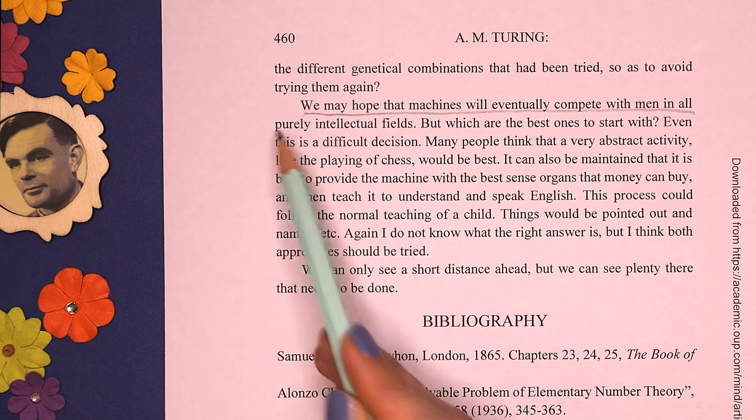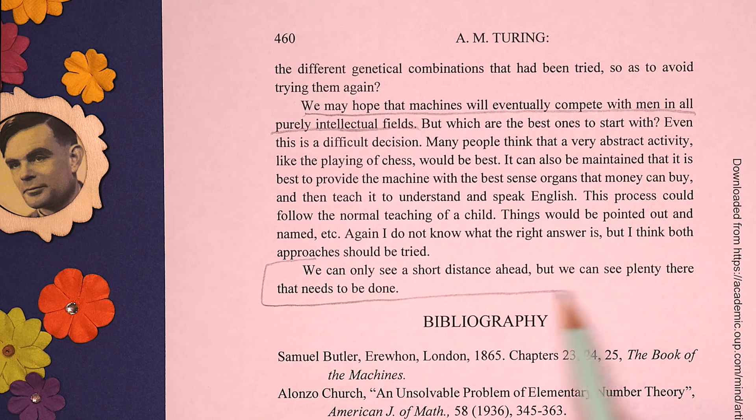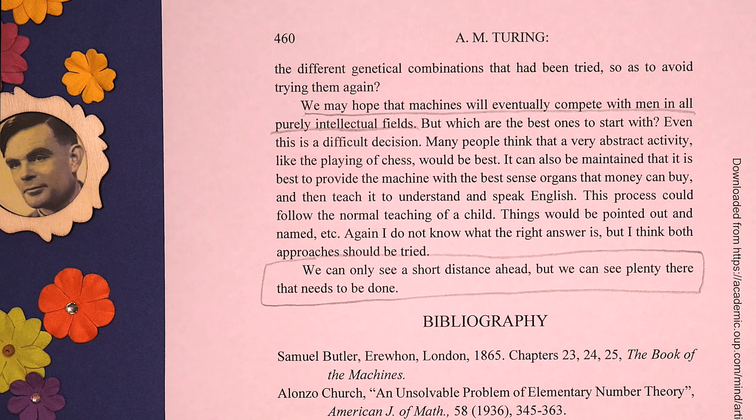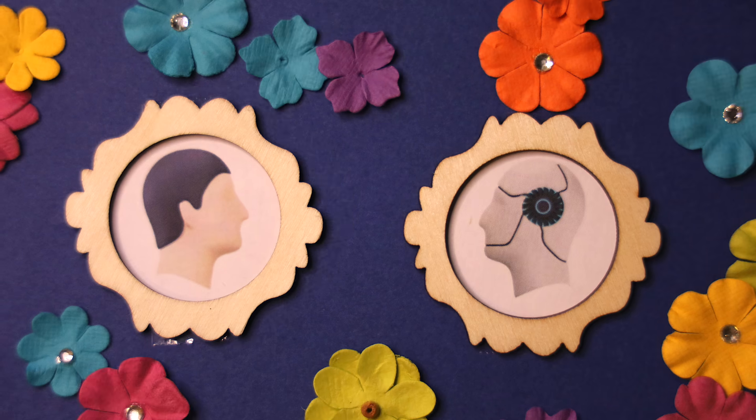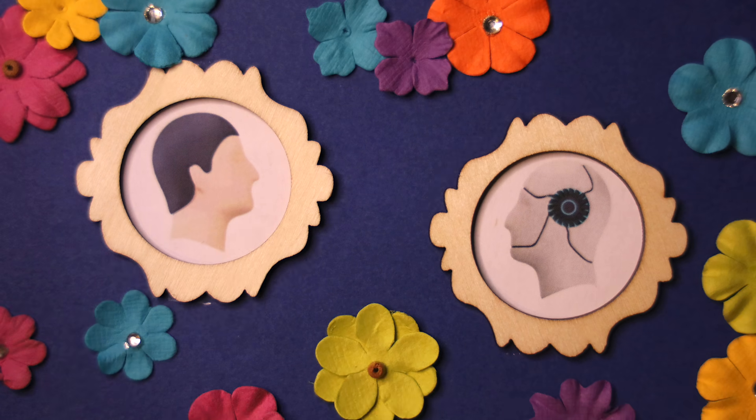Turing says that we may hope machines will eventually compete with humans in all purely intellectual fields. And I love this last line: 'We can only see a short distance ahead, but we can see plenty there that needs to be done.' So much of what Turing imagined we've been lucky to already witness, and yet many of us are no closer to regarding machines as thinking entities. I wonder what kind of test would satisfy us that a machine had taken its first steps onto the continuum of intelligence — would you ever feel empathy for one, or consider it to think?